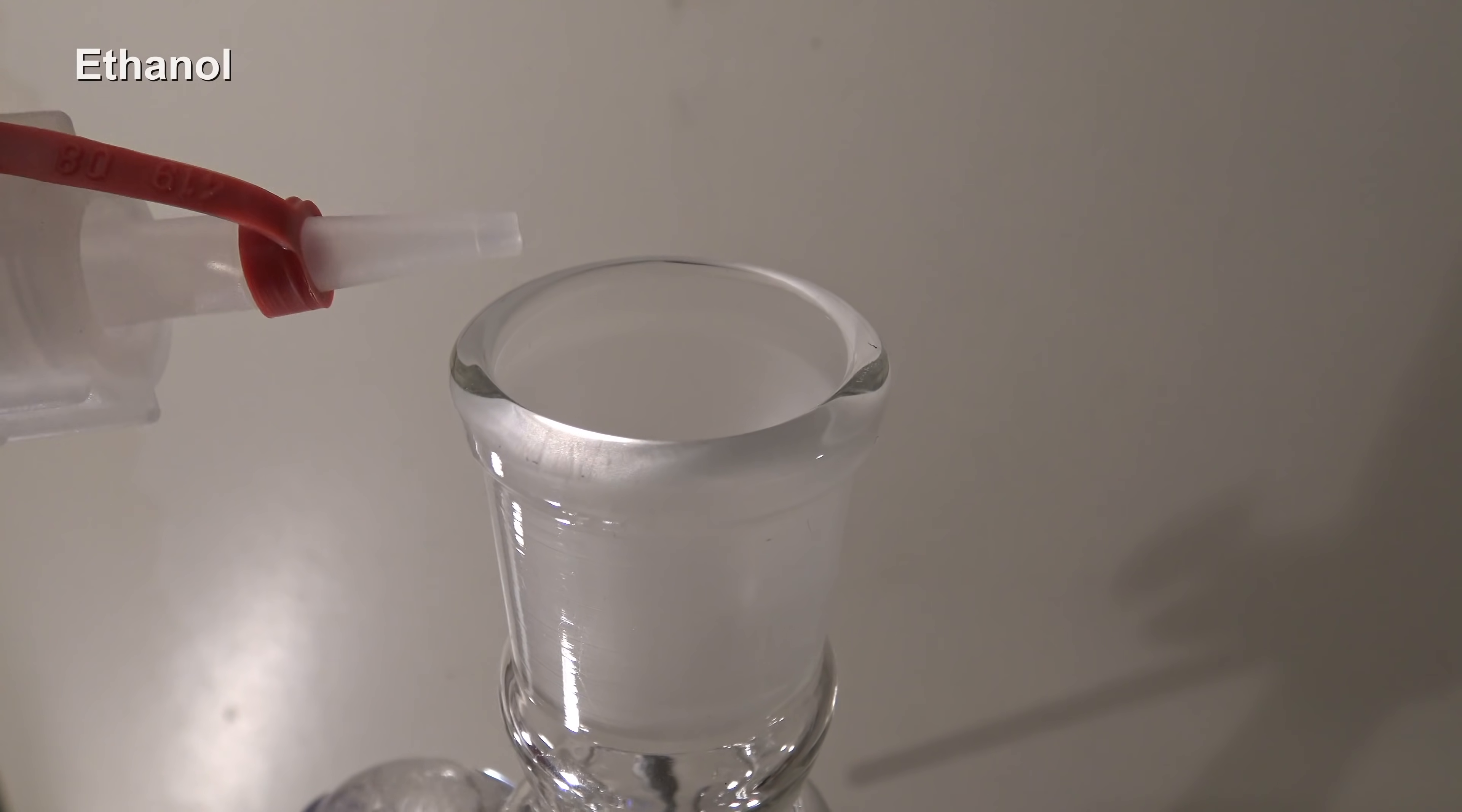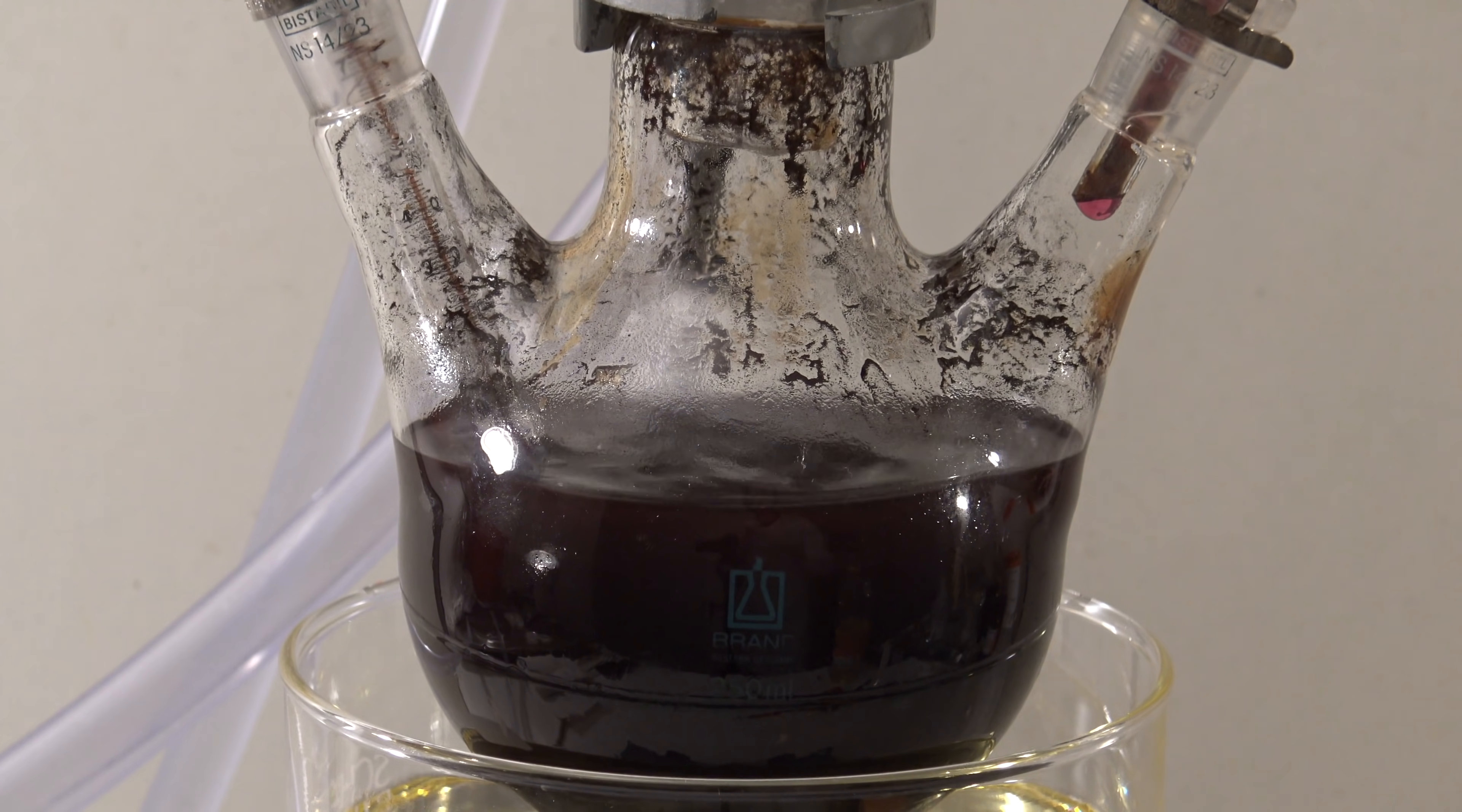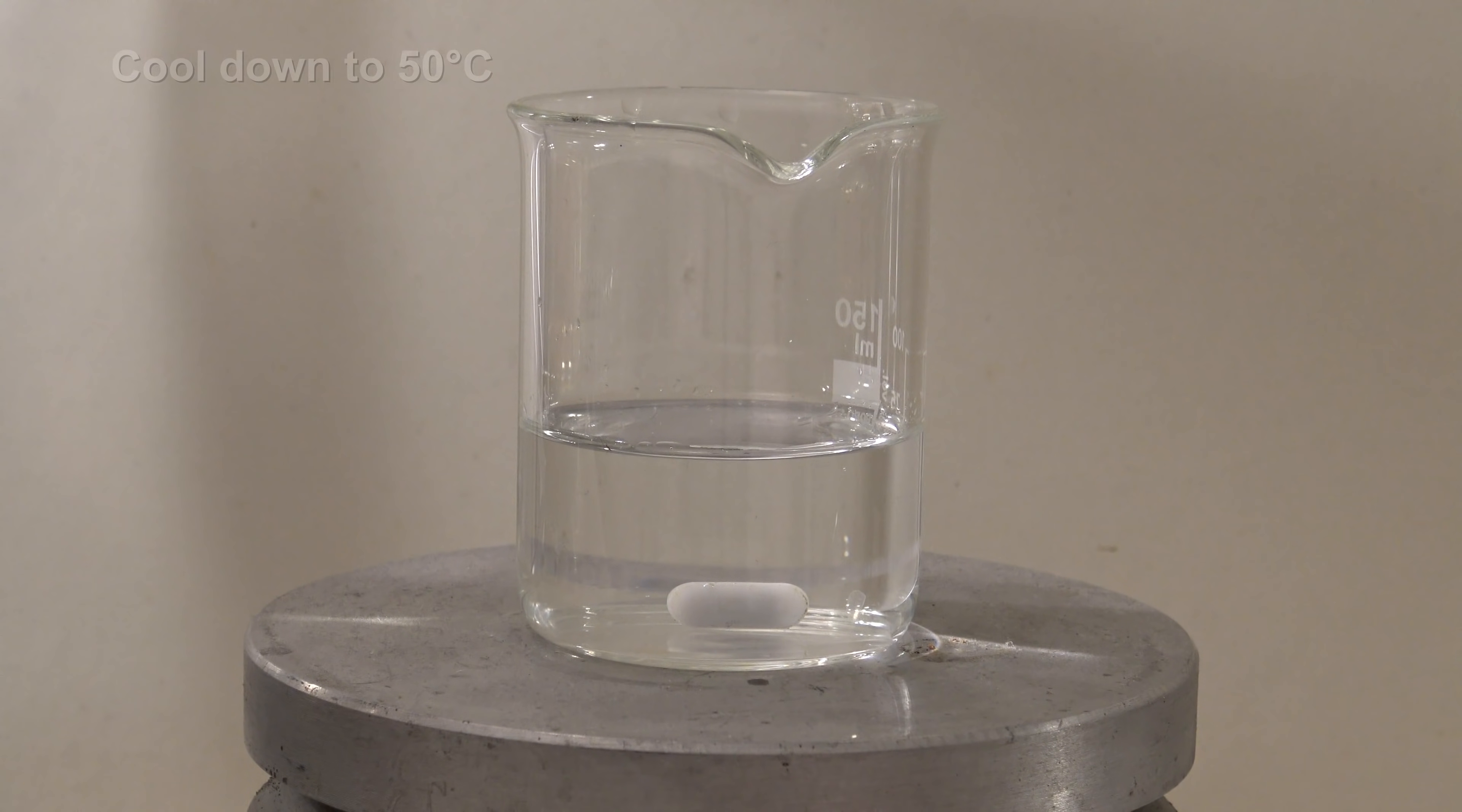At the end, some ethanol was added and the mixture was stirred again to reduce the residual permanganate, then it was left to sit until it reached 50 degrees Celsius.